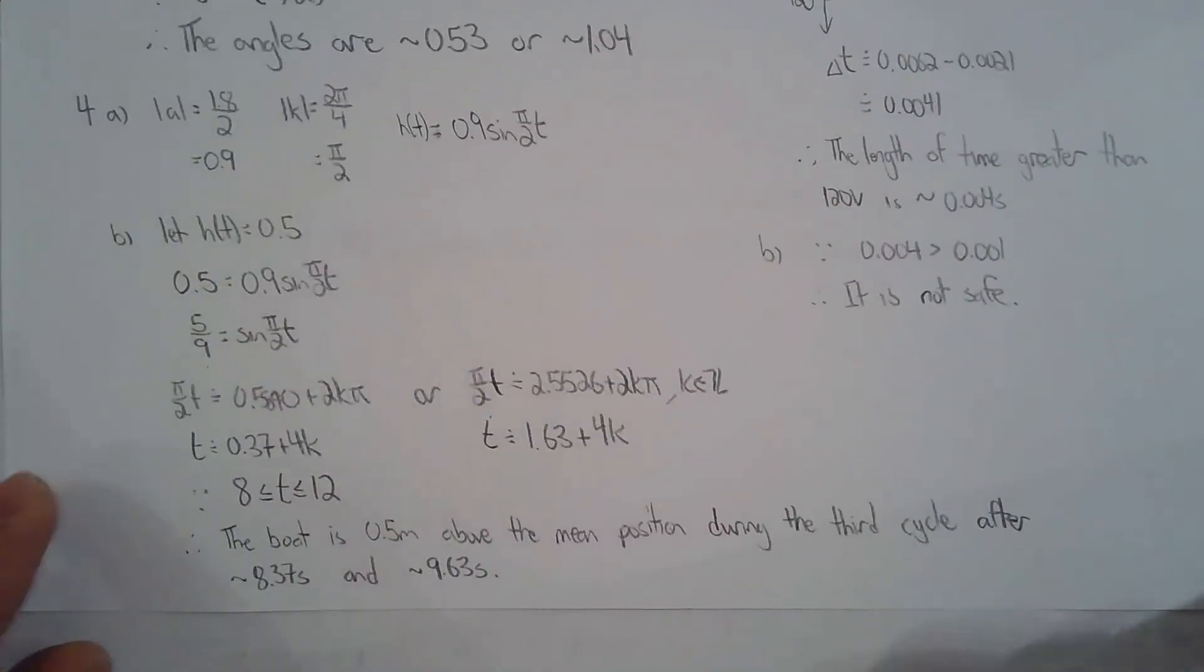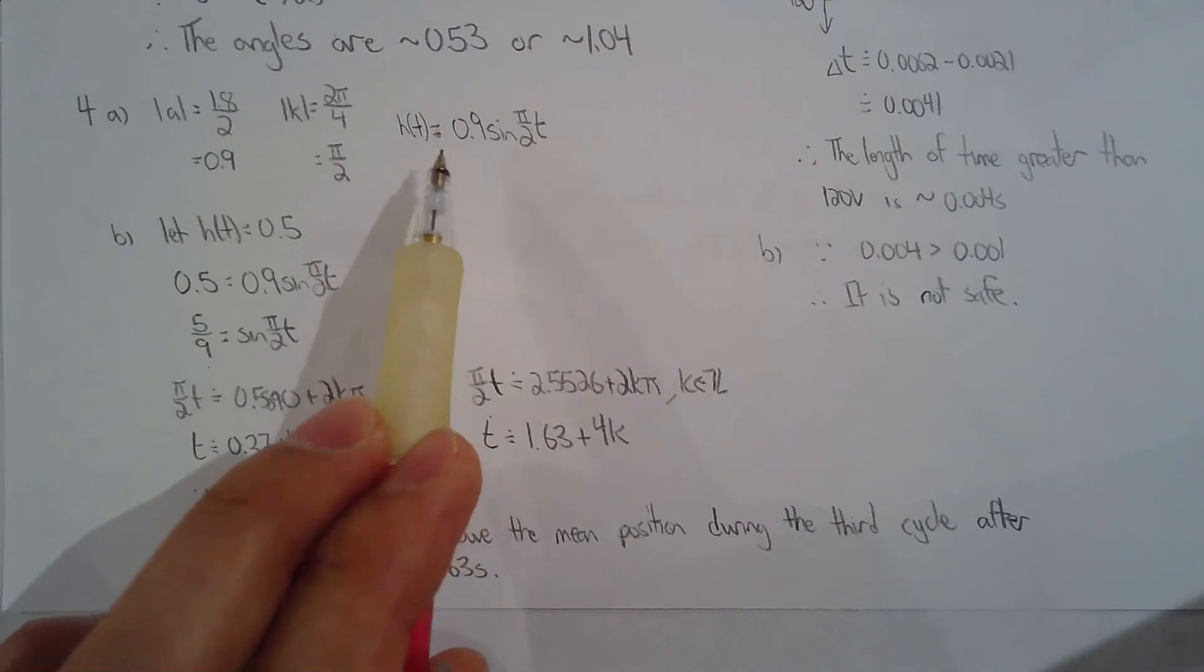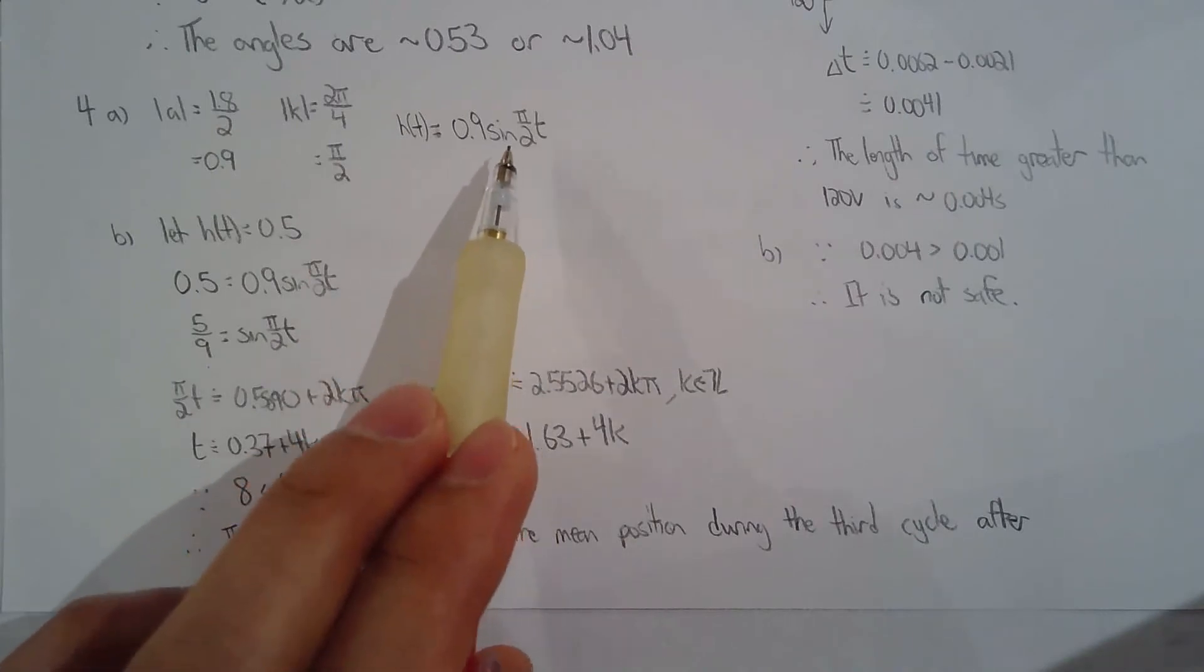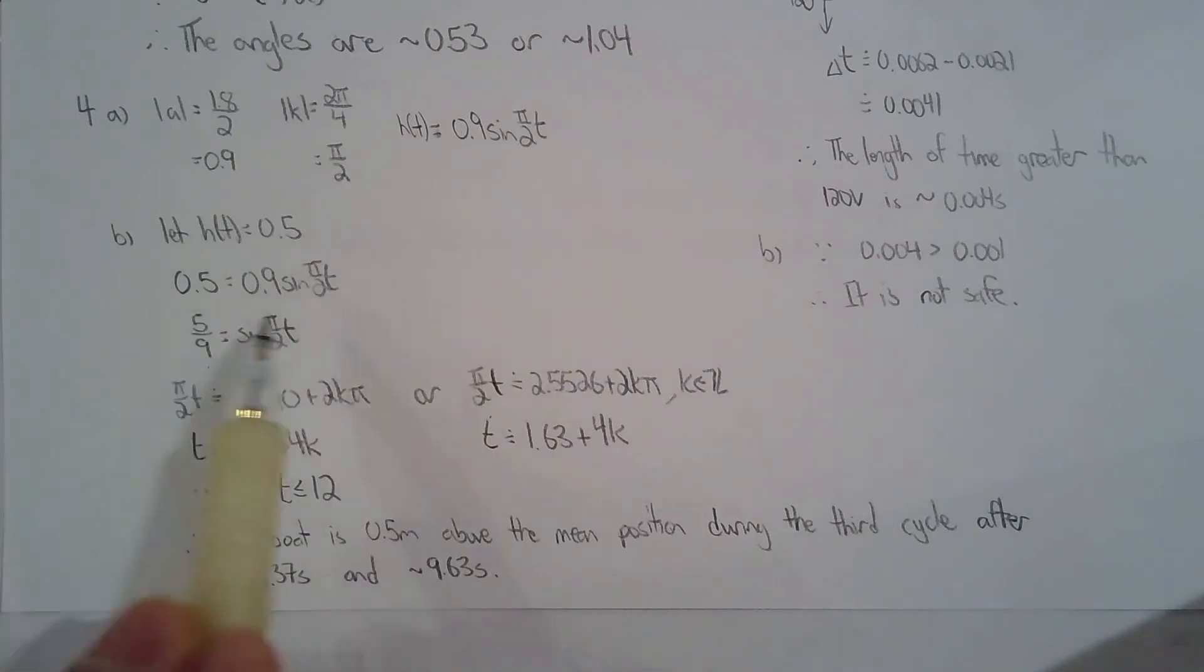Question four, we're looking at a boat that's tied. Basically, you solve for the model. So amplitude is 0.9 and the K value is pi over 2. And then they say, when is the height 0.5 meters? So I solve for the infinite solutions. Now they say the third cycle.